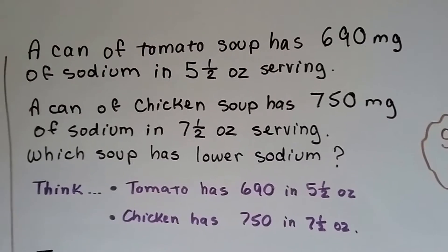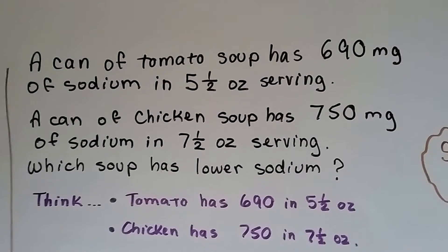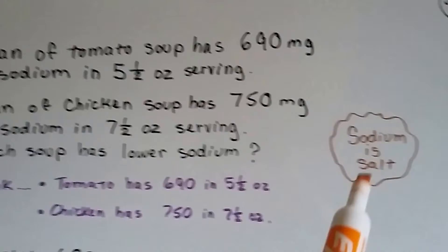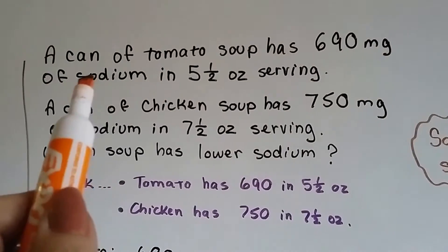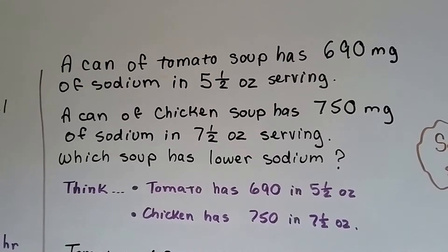A can of tomato soup has 690 milligrams of sodium in a five-and-a-half-ounce serving. So you know sodium is salt. And you shouldn't have too much of it. You should watch that in your diet. You do need it, but not too much.